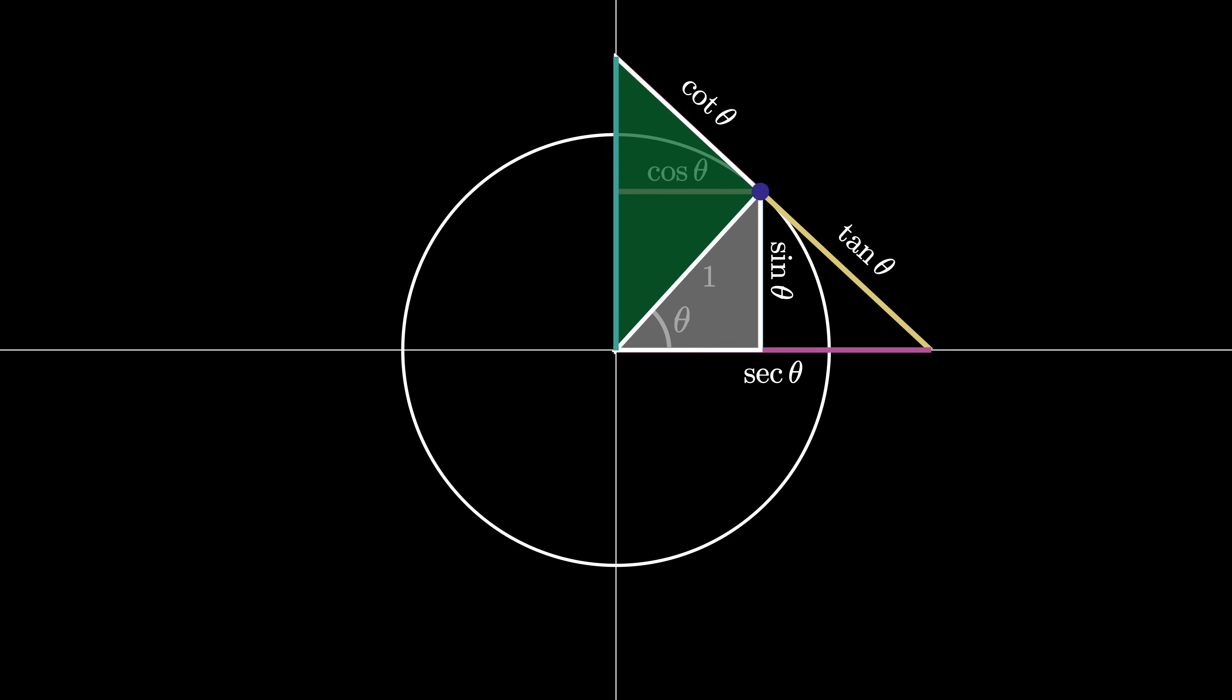Similarly, we can compute the length of the hypotenuse of this new triangle using the similarity of triangles to be 1 divided by the sine of theta, which we define to be the cosecant of theta.